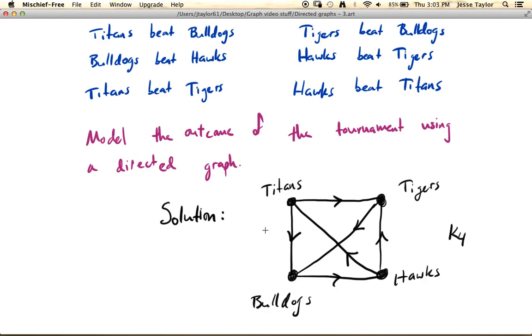Directed graphs are just another way to get additional information if you're using graphs for modeling. They don't have to necessarily represent victory like we have here in these sports teams. The directions could mean one-way streets if you're modeling a city grid.